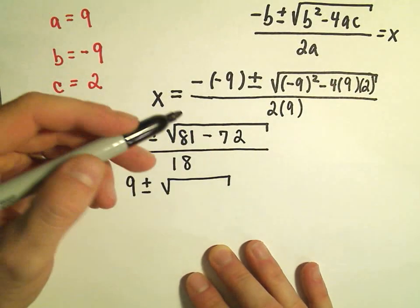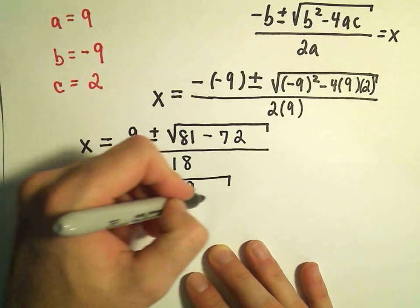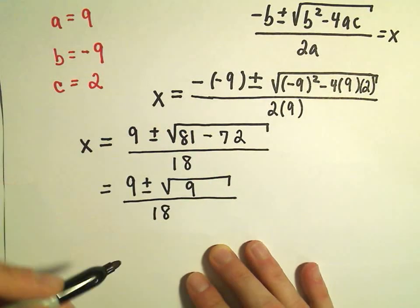Let's just keep simplifying underneath the radical. We have 81 minus 72, which is going to be 9, lots of 9's in this problem, over 18.